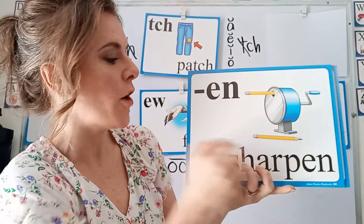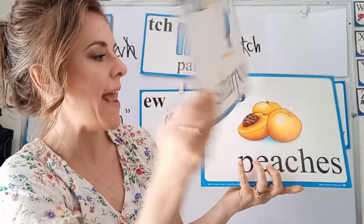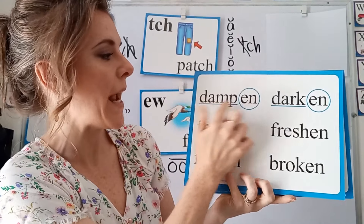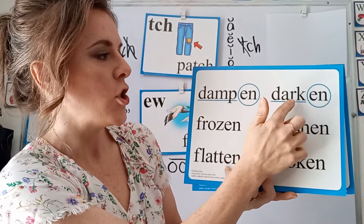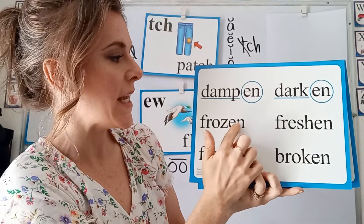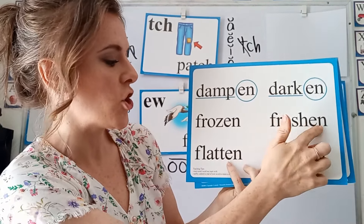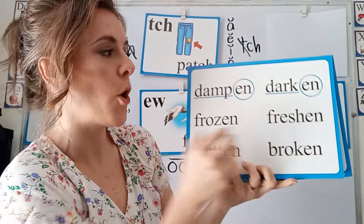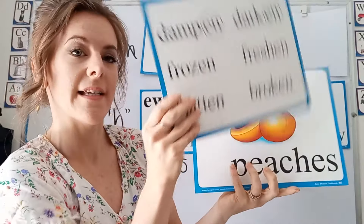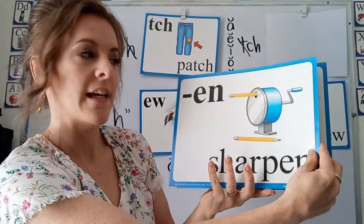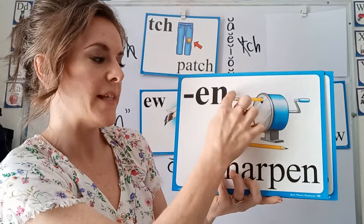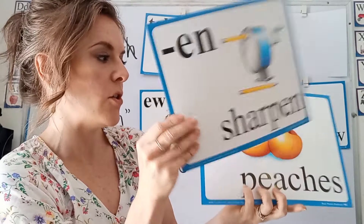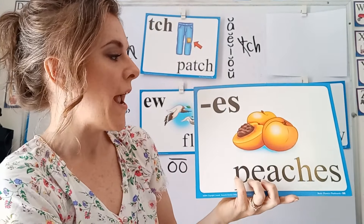EN in sharpen. Dampen, darken, frozen, freshen, flatten, broken. It is a suffix that comes at the end of a root word to make a new word.